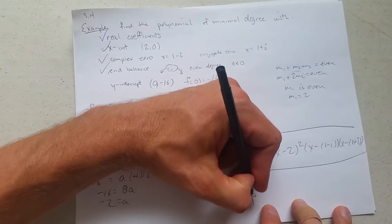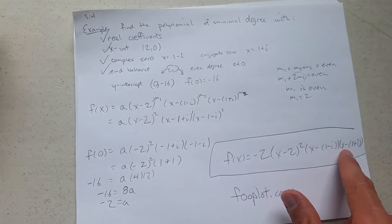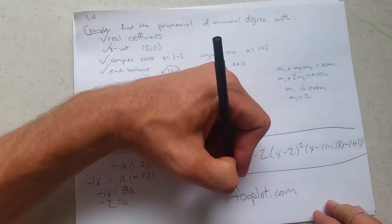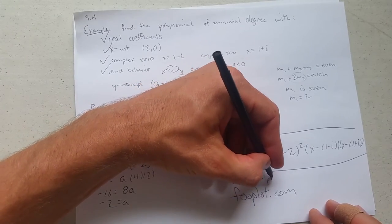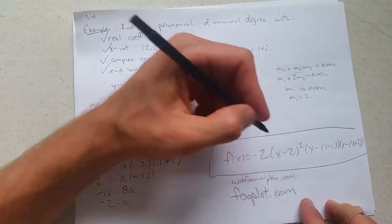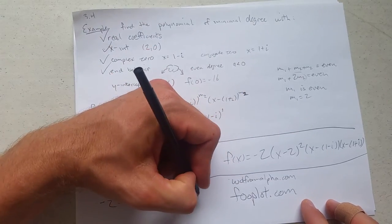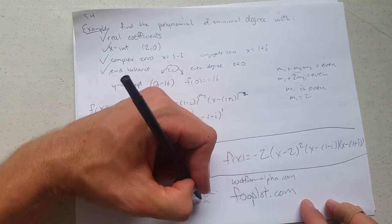How can you check? Fooplot.com. And you can graph this out. They may not let you do i, so you may have to—you can always go to Wolfram. Wolfram understands i very well. Now, you use these to check only. So you can check with either of these.